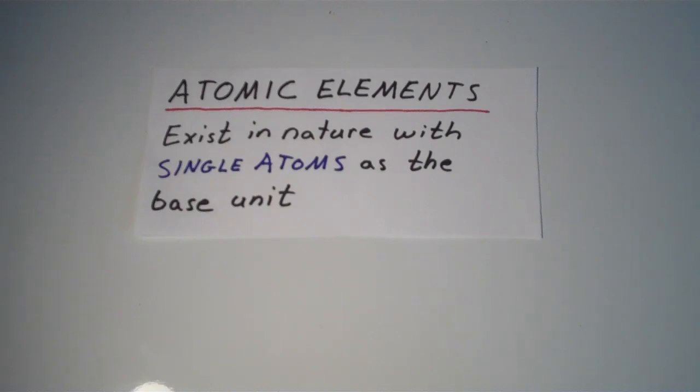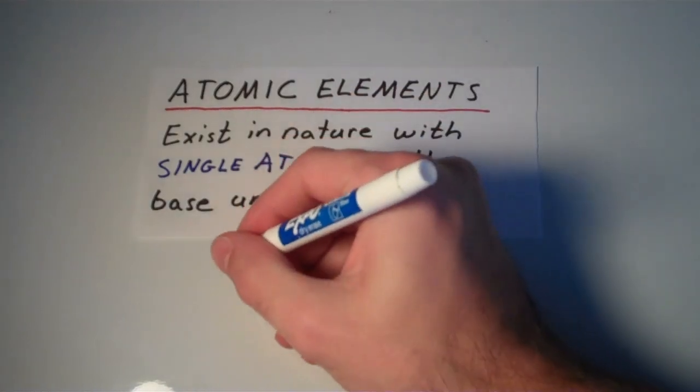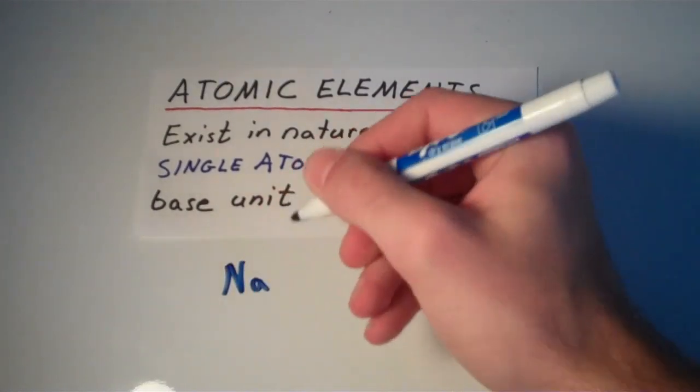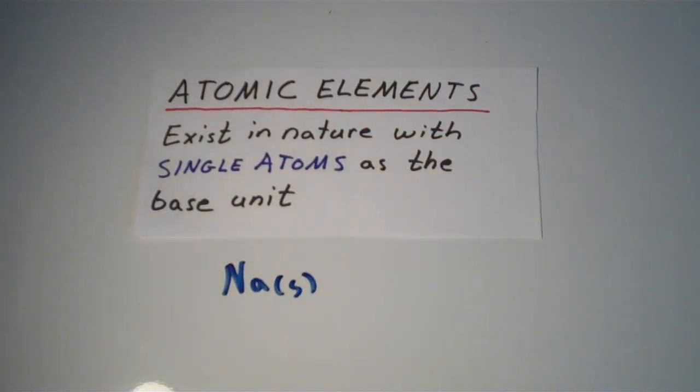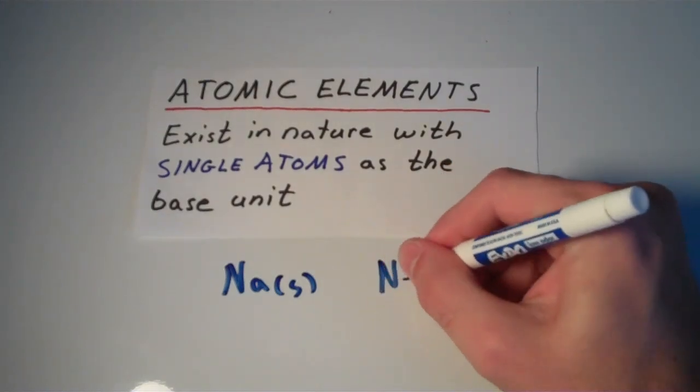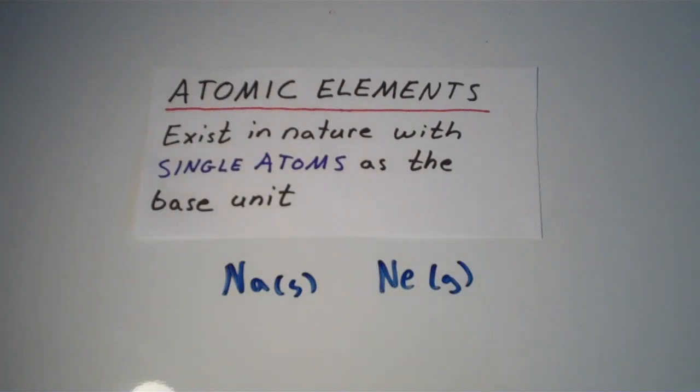So let's start with atomic elements. Atomic elements are those that exist in nature with single atoms as the base unit. So for example, if I have a sample of sodium metal, that sodium metal is composed of sodium atoms. If I have a sample of neon gas, that neon gas is composed of individual neon atoms.